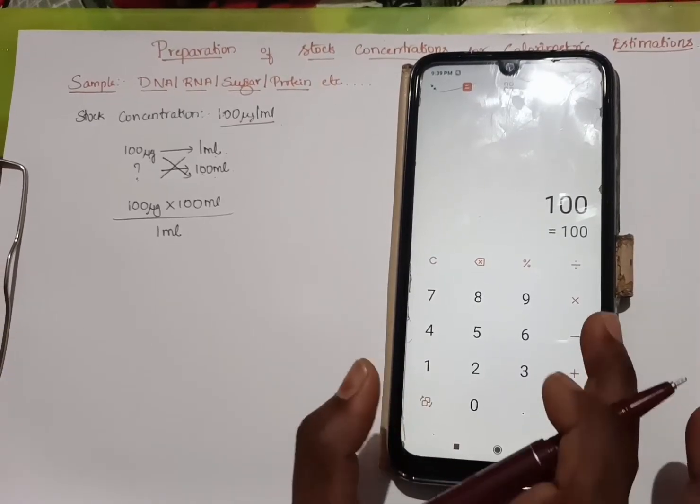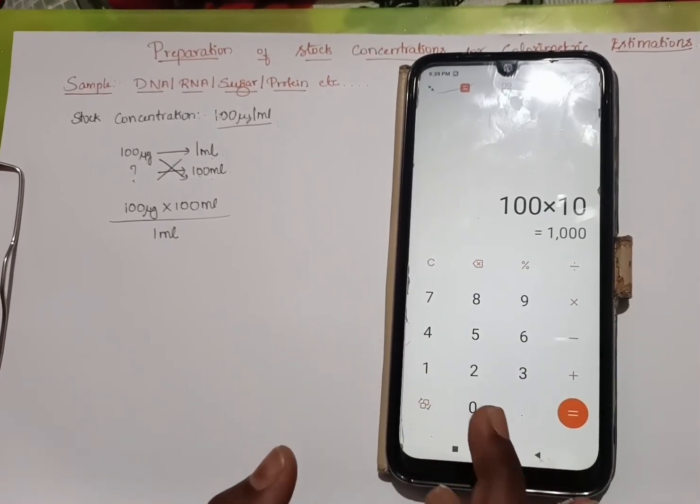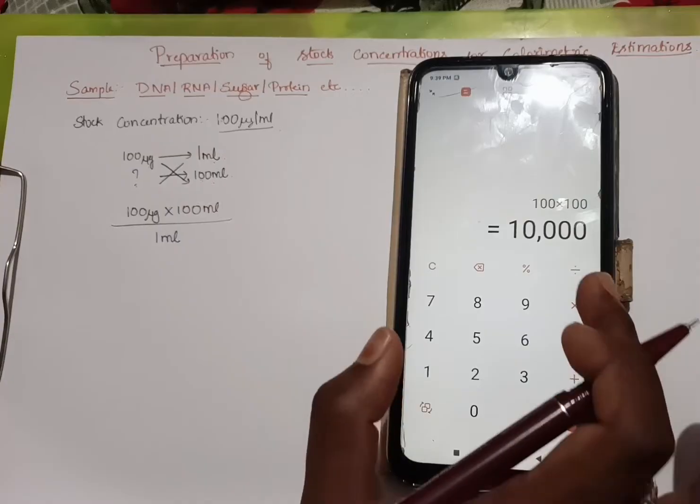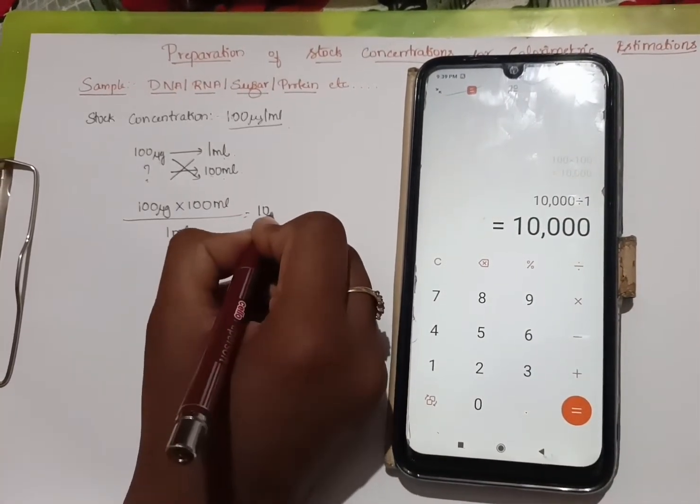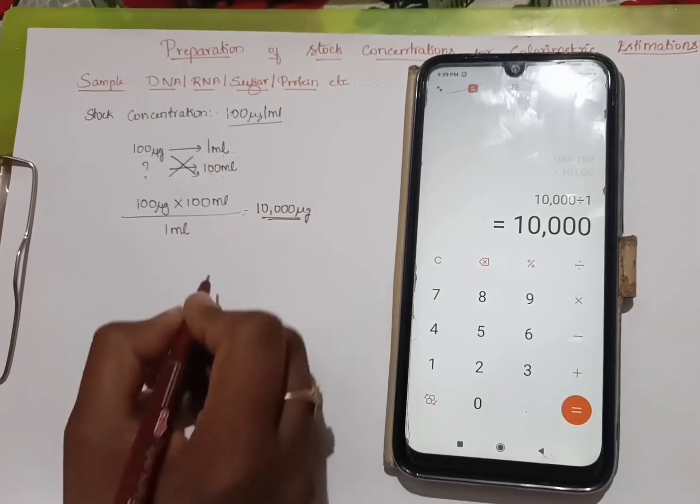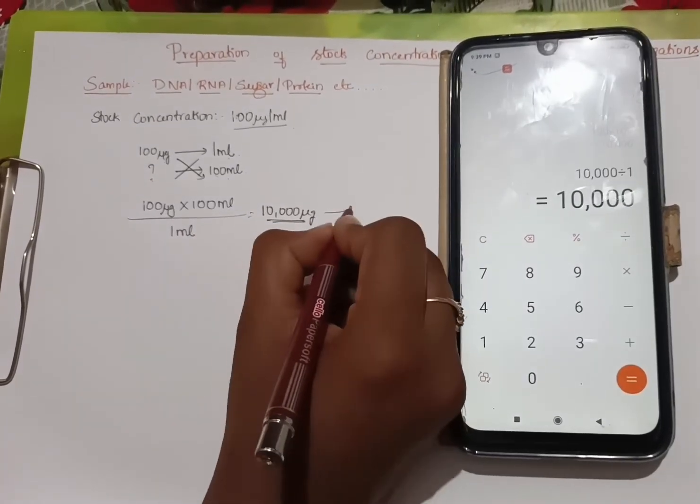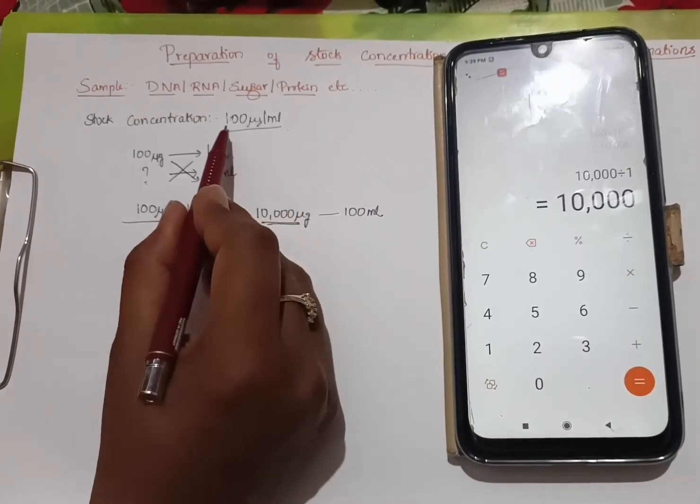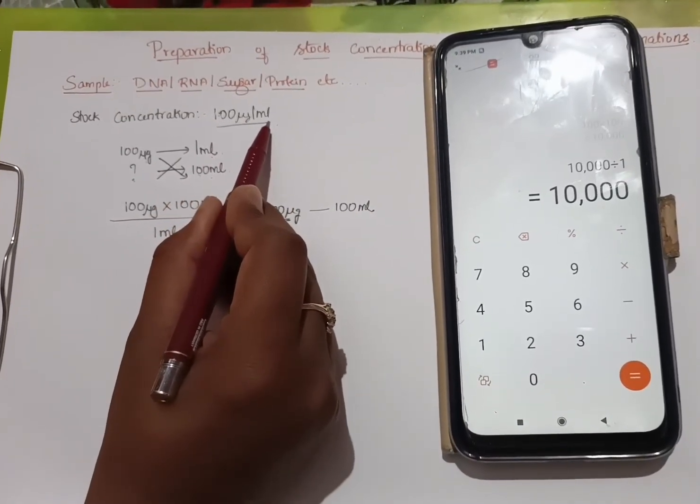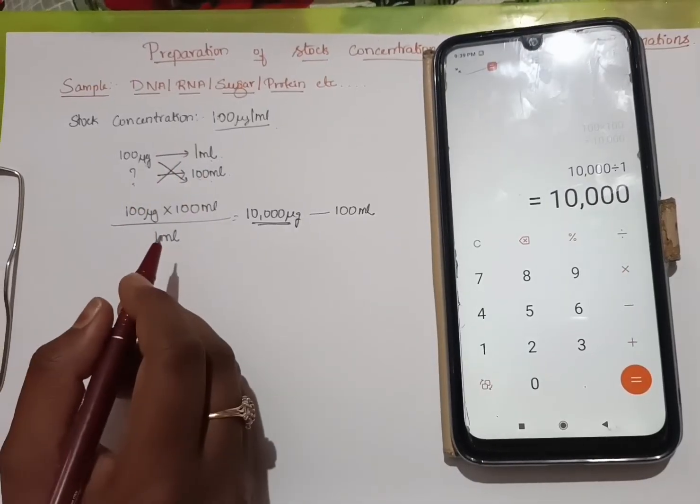100 micrograms into 100 ml equals 10,000 divided by 1, which remains 10,000. So 10,000 micrograms I should be adding in 100 ml of distilled water to get 100 micrograms per ml of my stock concentration.